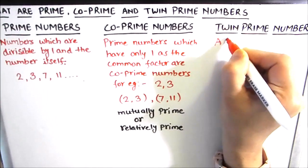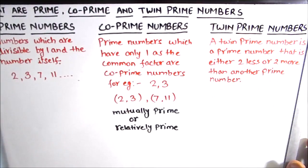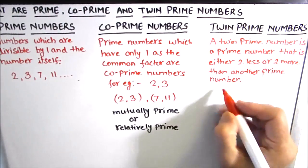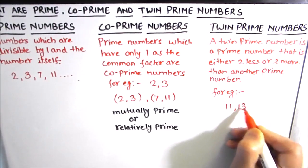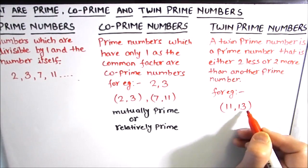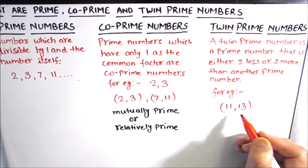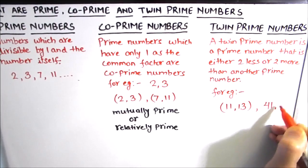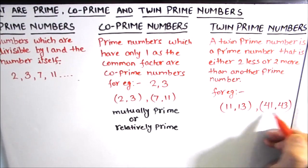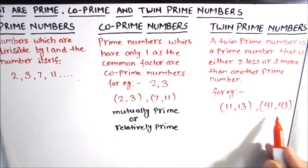A twin prime number is a prime number that is either 2 less or 2 more than another prime number. In other words, prime numbers which have a prime gap of 2 are called twin prime numbers. For example, 11 and 13 have a gap of 2 — since 13 minus 11 equals 2, they are twin primes. Another pair is 41 and 43, because 43 minus 41 is also 2.